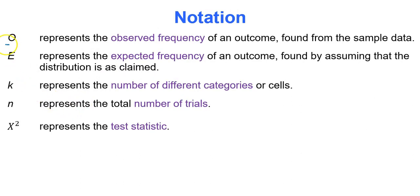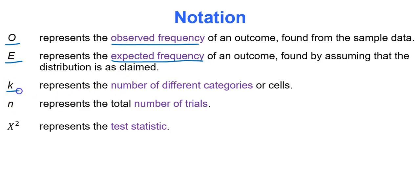Capital O represents your observed frequency for each of the outcomes or categories. Big E represents the expected frequency of each outcome or category. K is the number of different categories — for instance, when rolling a die, the number of categories or outcomes is six. Little n is the total number of trials, and the chi-squared symbol represents the test statistic.